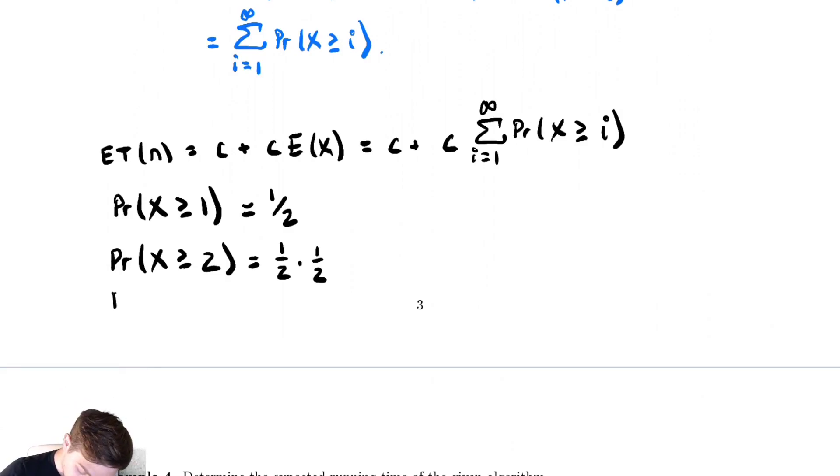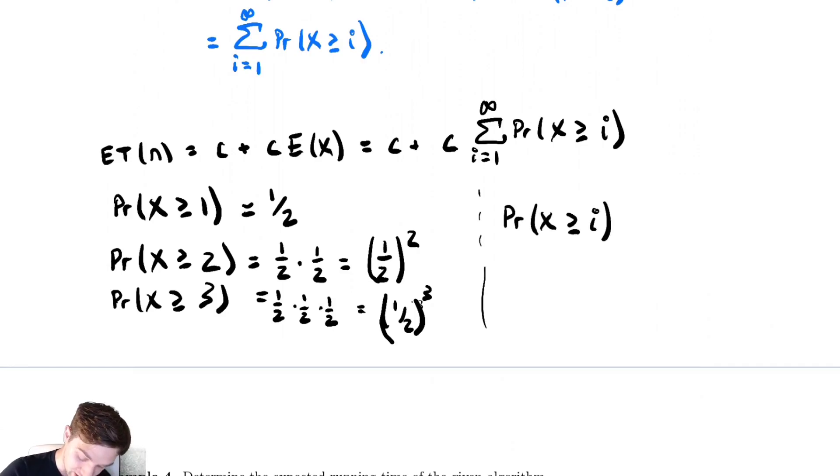Now what is the probability that x is greater than or equal to 3? Well, that's 1 half times 1 half times 1 half. And let's try and write these out in a nicer way. The second one I could write as 1 over 2 squared. This third one I could write as 1 over 2 cubed. Which means the probability that x is greater than or equal to i interpolated in that pattern would be 1 half to the i.